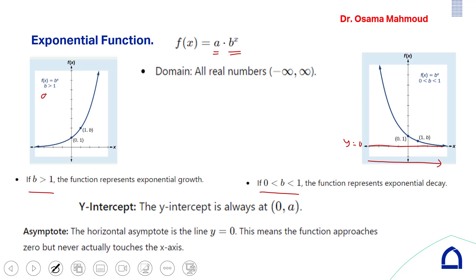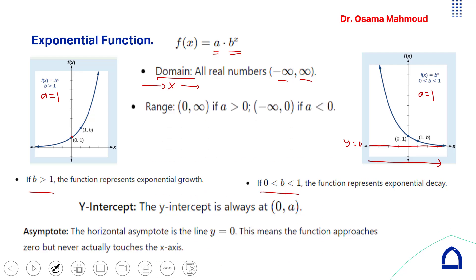When a equals 1, the curve intersects at (0, 1). The domain of the exponential function is all real numbers: from minus infinity to positive infinity. The range for exponential growth starts from 0 to infinity. For exponential decay with negative a, the range is minus infinity to 0.